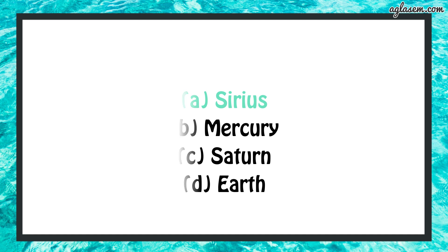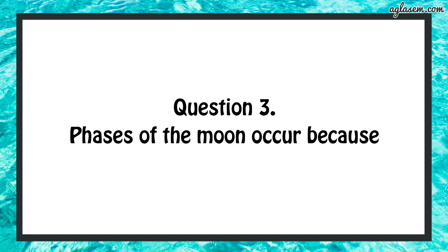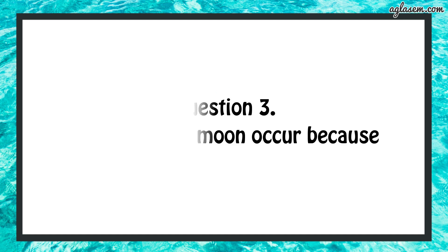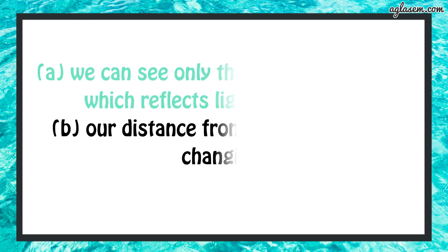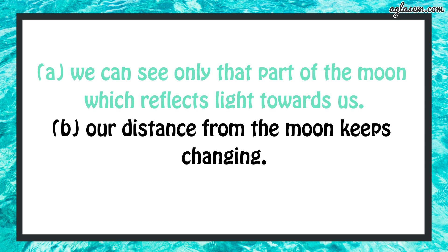Question number 3 says: phases of the moon occur because we can see only that part of the moon which reflects light towards us.